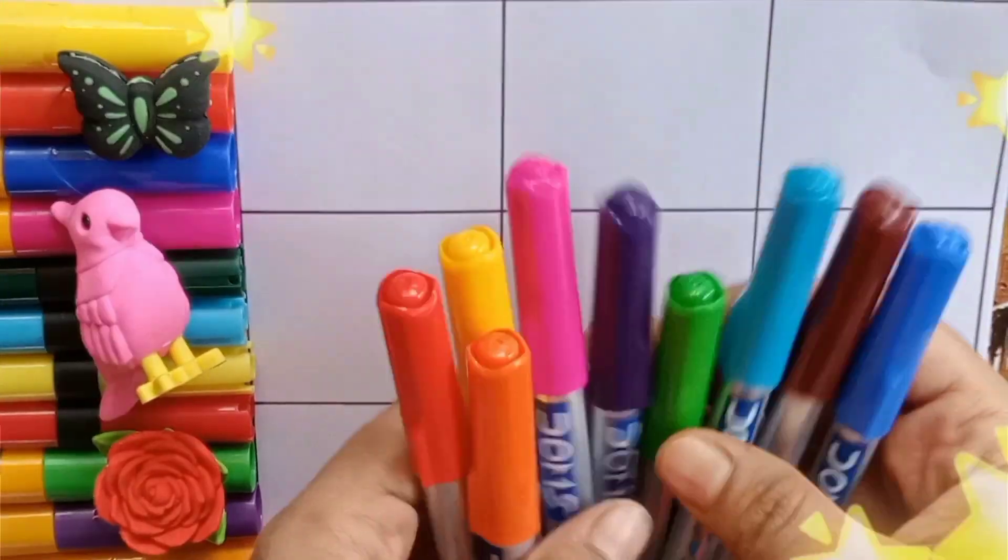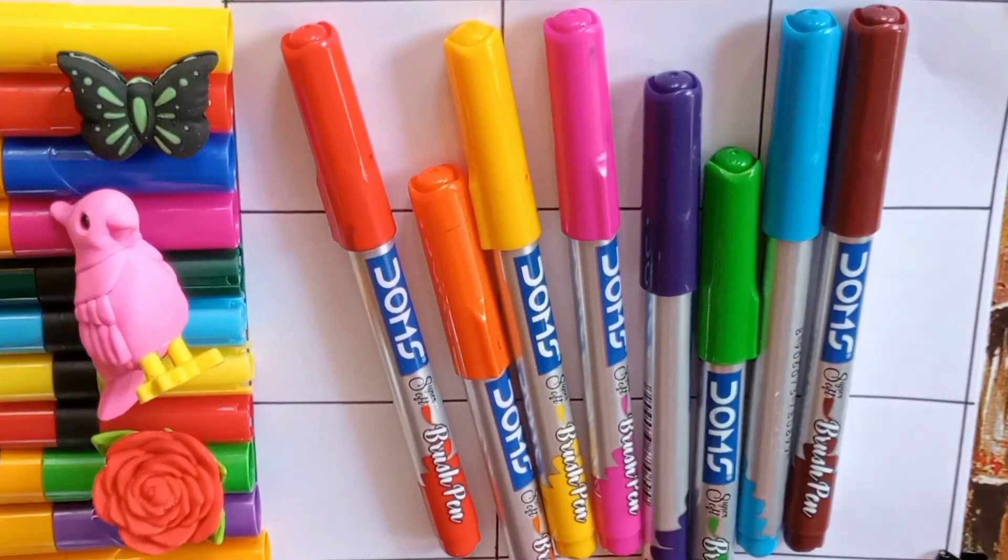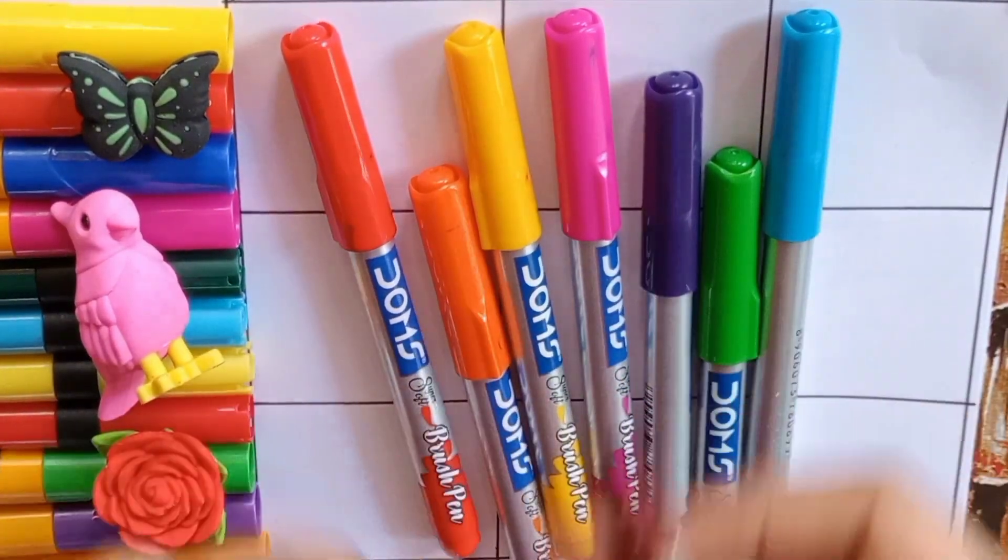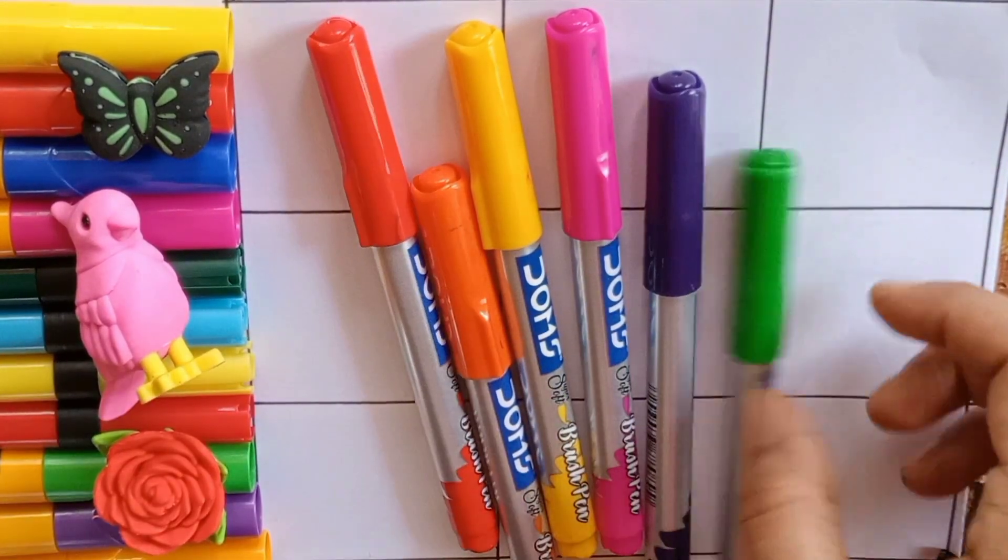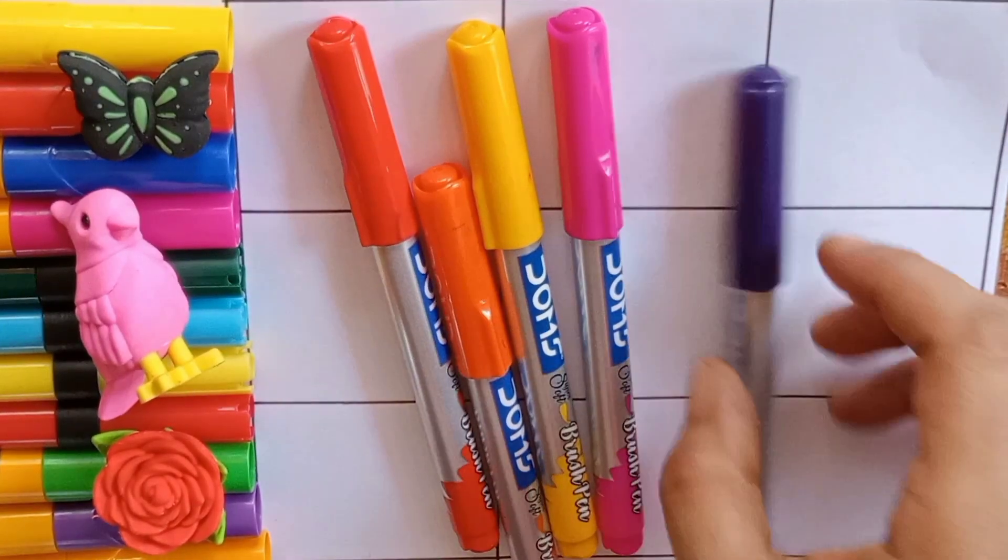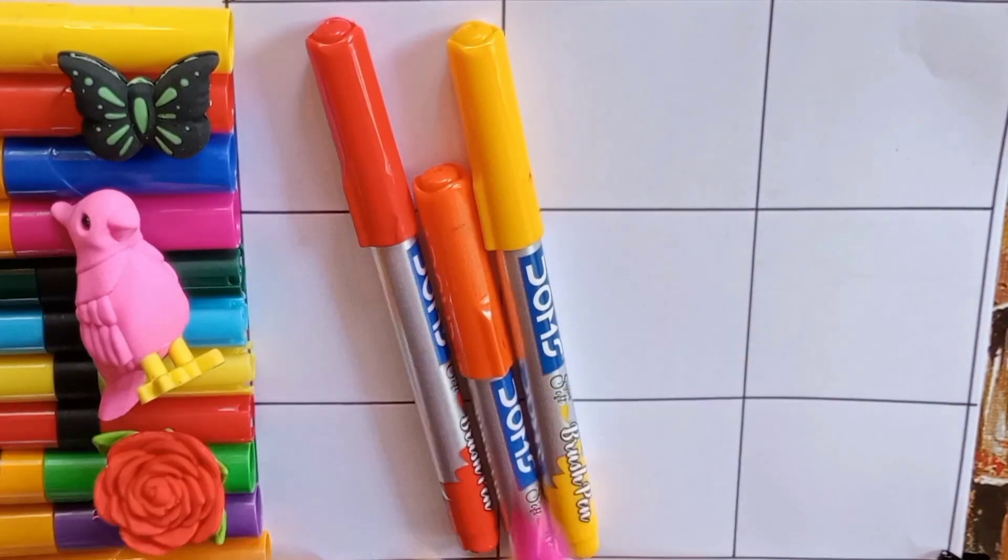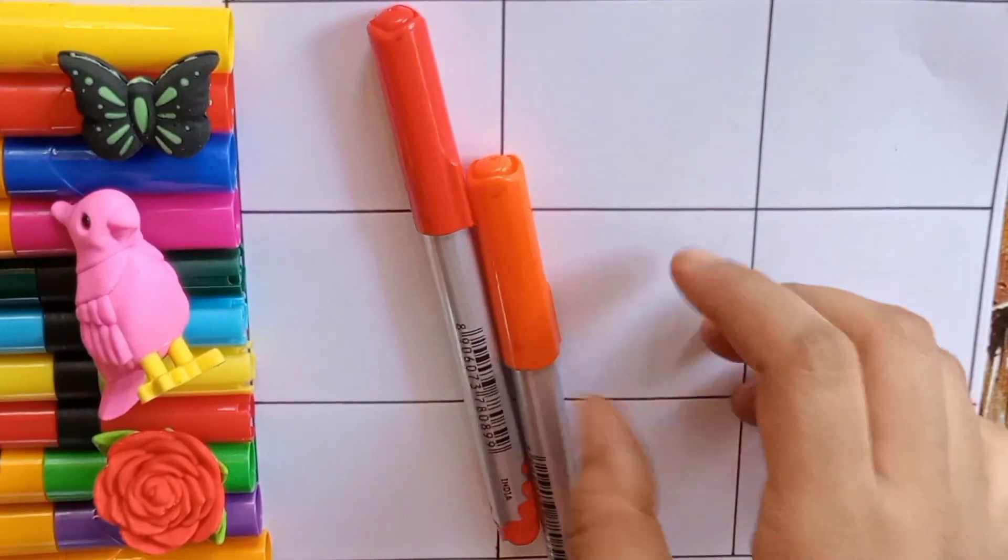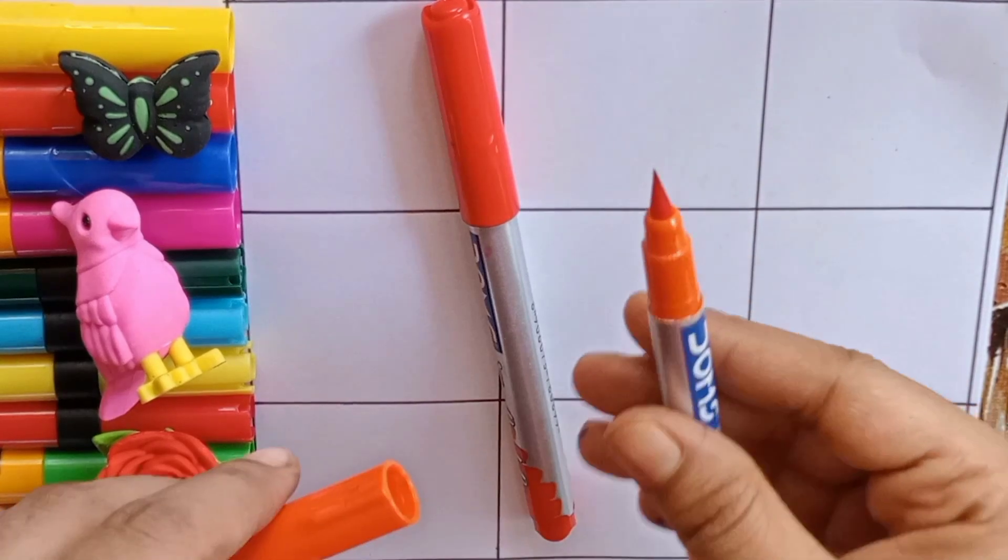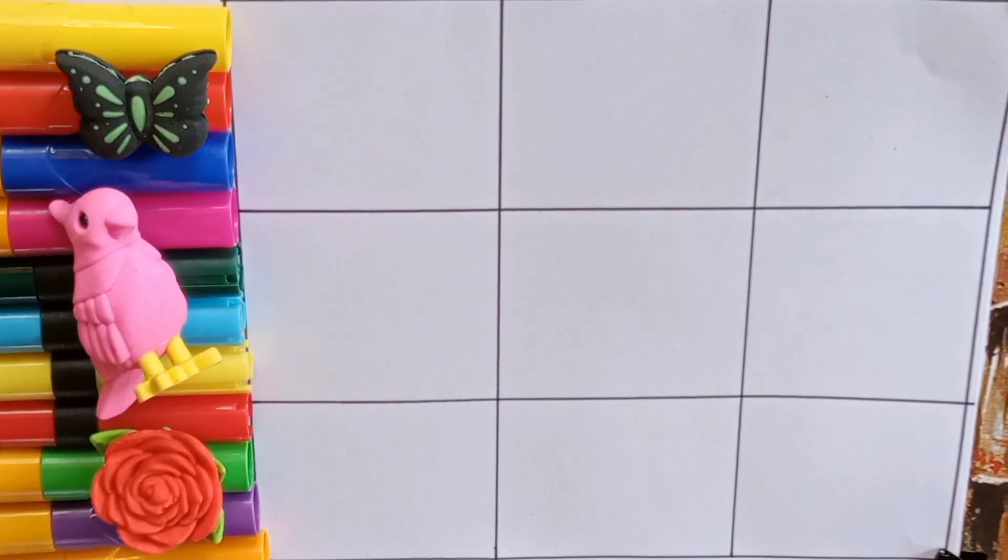Oh wow, color pens. So many colors. Blue color. Brown color. Sky blue color. Green color. Purple color. Pink color. Yellow color. Orange color. And the last one is red color. Let's learn alphabets.